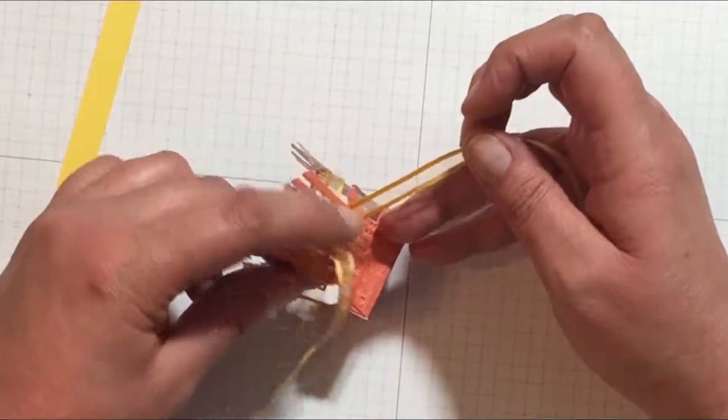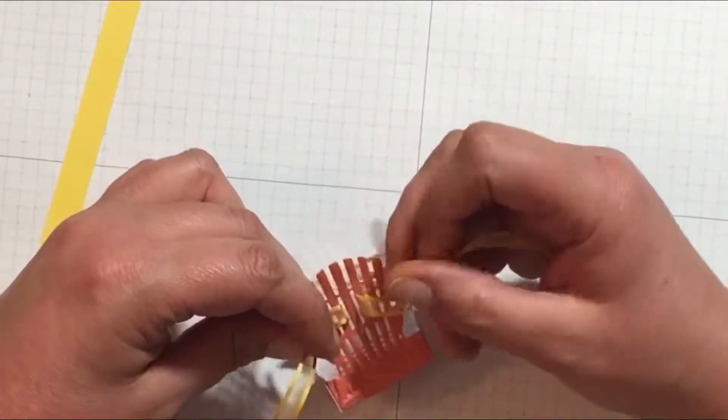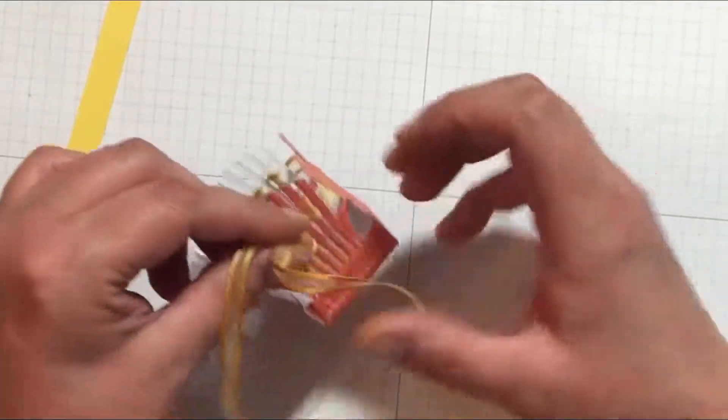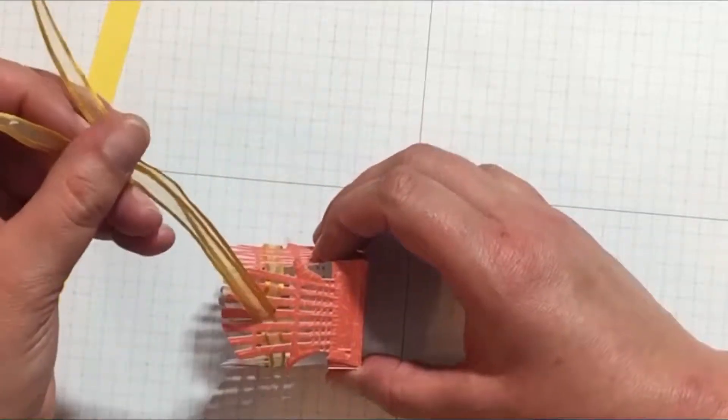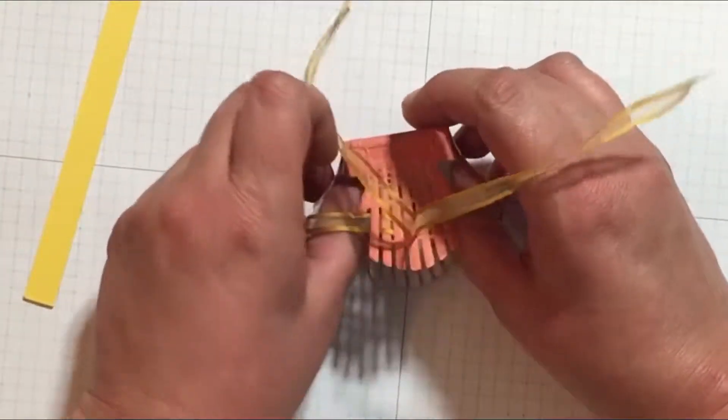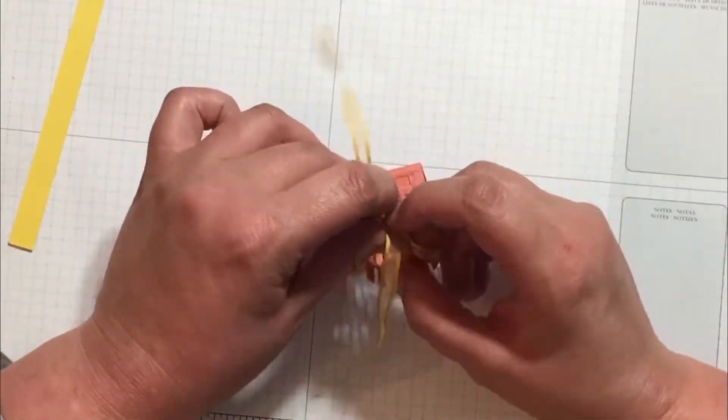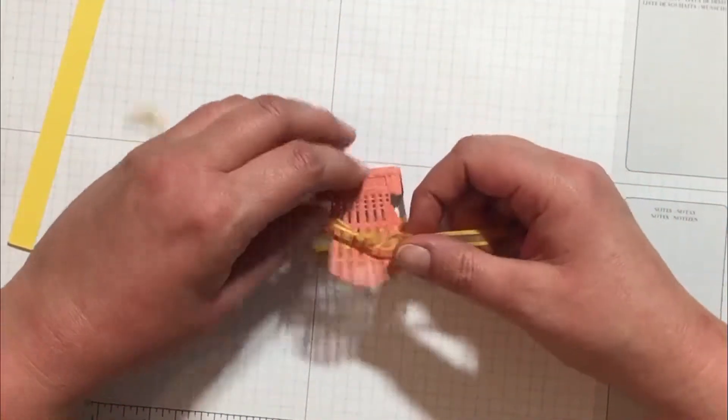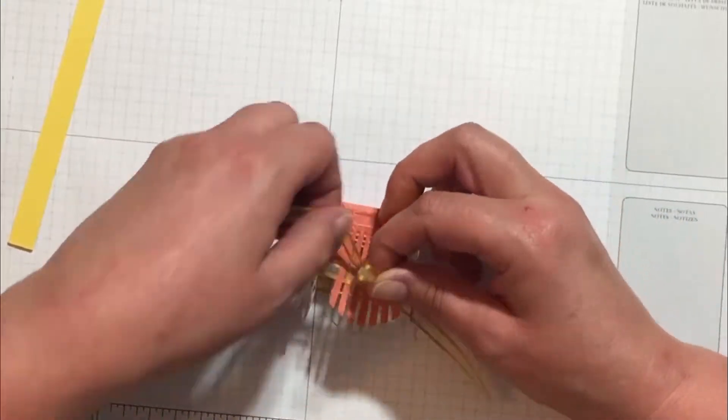In her original version, Babette just made a little paper bow with our envelope punch board and attached that to the front of the basket.